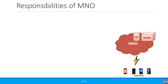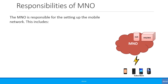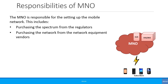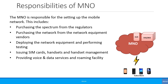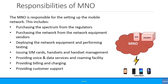The MNO is responsible for setting up the mobile network. This includes purchasing spectrum from regulators, purchasing network equipment from vendors, deploying the network equipment, and performing testing. It also covers issuing SIM cards, handsets and handset management, providing voice and data services and roaming facilities, providing billing and charging, providing customer support, and providing marketing, sales and distribution.